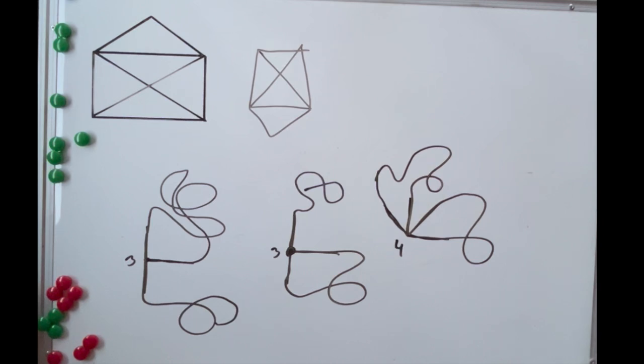So if odd nodes require us to start or end there, we can only manage two. One to start and the other to finish. A third or fourth node would leave no room to draw the whole shape.